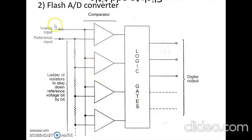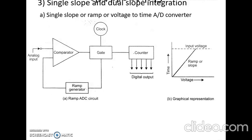Now let us look at the third type: single slope and dual slope integration. There are two types here — the single slope analog-to-digital converter and the dual slope integration analog-to-digital converter. Let us first examine the single slope, or ramp, or voltage-to-time analog-to-digital converter.